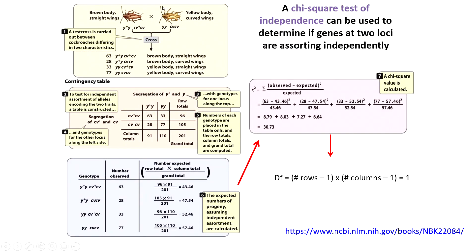Let's start with these cockroaches. We are looking at two different traits: body color and wing texture. There are two different alleles for body color — brown and yellow — and two textures for the wing — straight and curved. We have two different genes: body color and wing texture. Are they attached to the same chromosome or do they assort independently? The null hypothesis is that the genes aren't linked and we would expect them to assort independently. We have our test cross and results — this is what we observe.